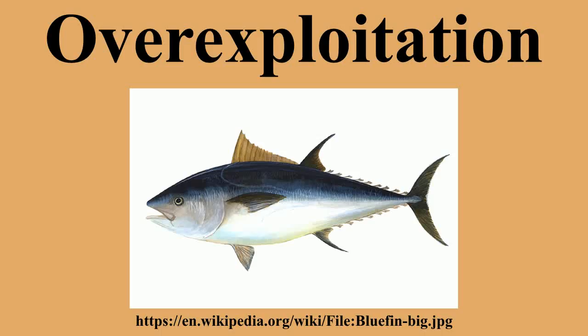Overall, 50 bird species that have become extinct since 1500 have been subject to over-exploitation, including the Great Auk, the penguin-like bird of the north, hunted for its feathers, meat, fat, and oil. The Carolina parakeet, the only parrot species native to the eastern United States, was hunted for crop protection and its feathers.